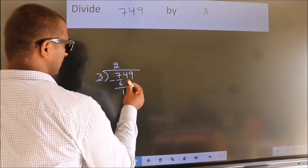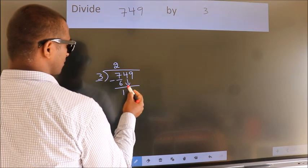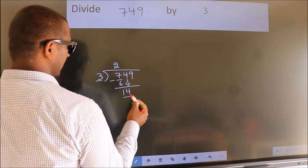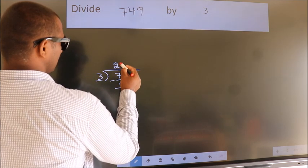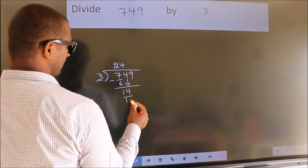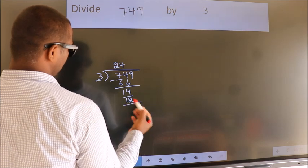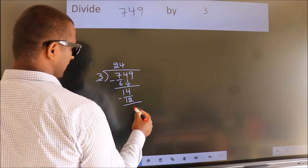After this, bring down the beside number. So 4 down, giving us 14. A number close to 14 in the 3 table is 3 times 4 equals 12. Now we subtract. We get 2.